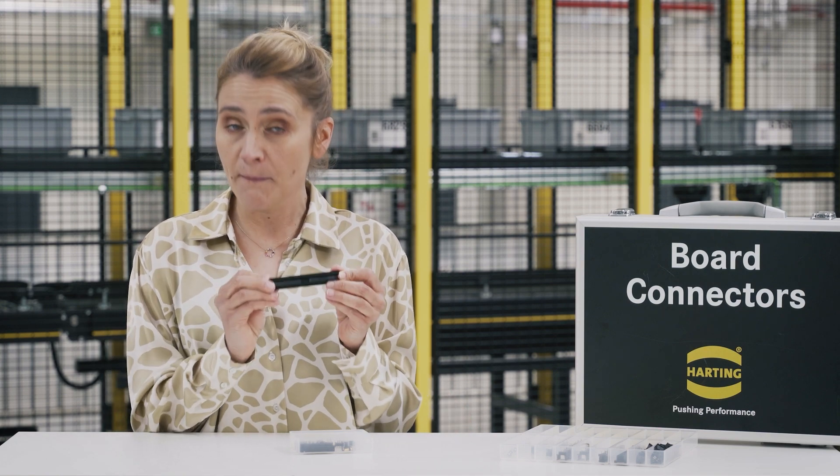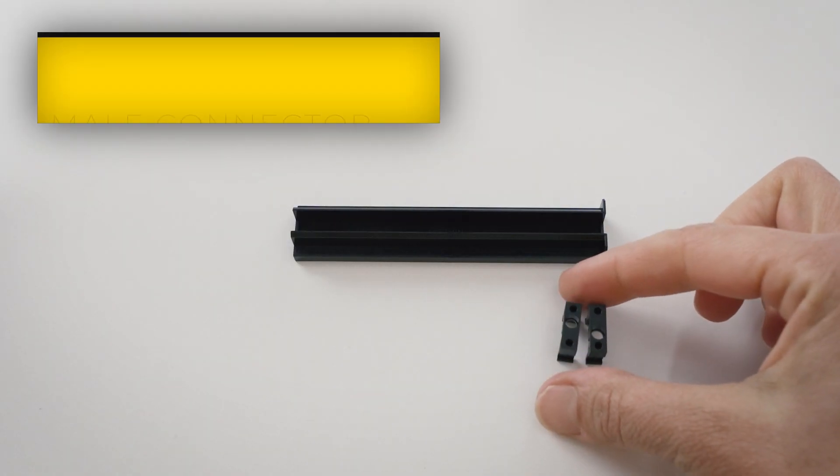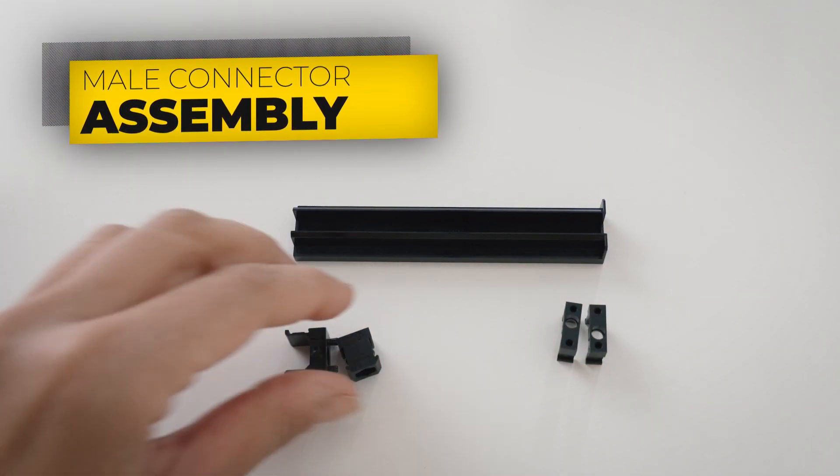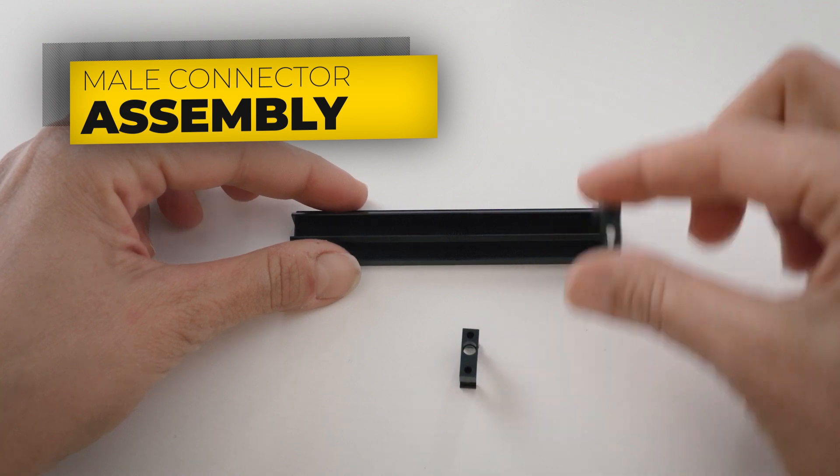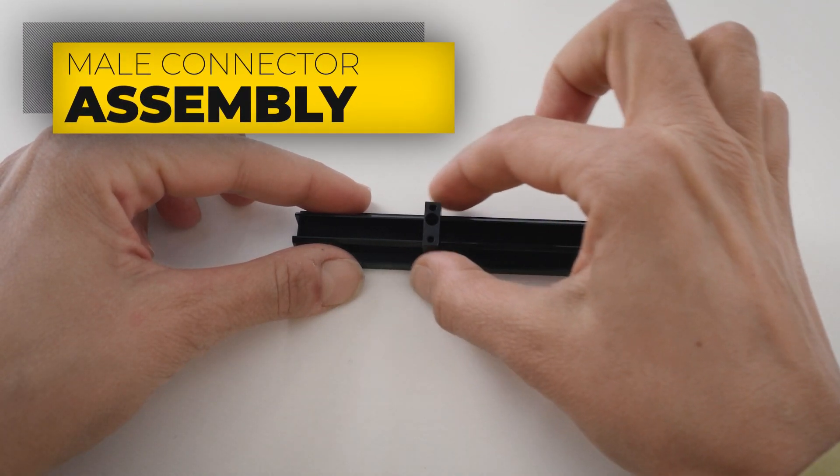What is left to be done is to assemble our connector. Let's make one to show you how easy and fast it is. To help you with the self-assembly, you have the assembling aid for male and female connectors. We start with the P or T modules, although you can also place them in the middle or wherever it is necessary on the connector.